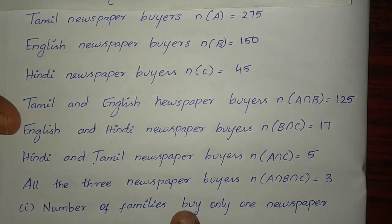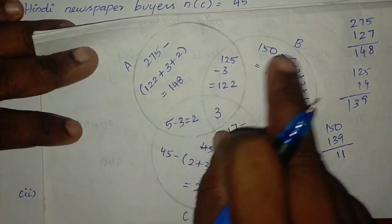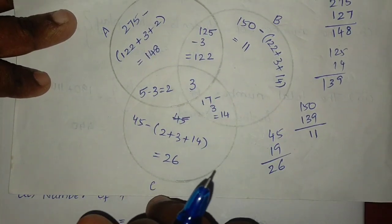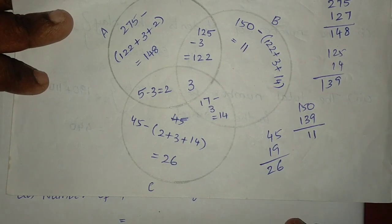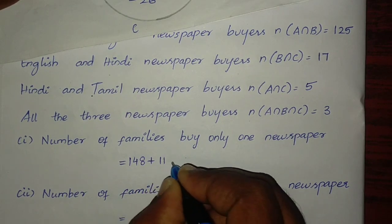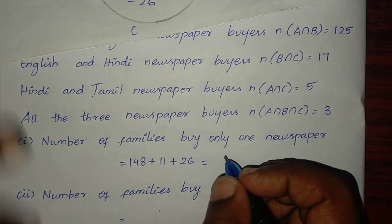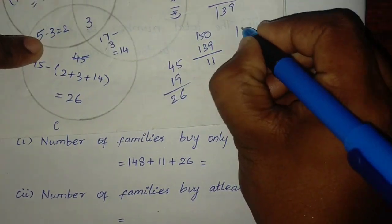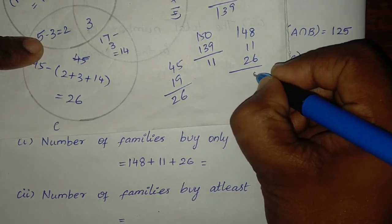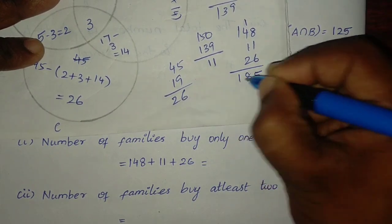So the number of families reading only one newspaper: only Tamil is 148, only English is 11, only Hindi is 26. Adding them: 148 plus 11 plus 26 equals 185. So 185 families read only one newspaper.